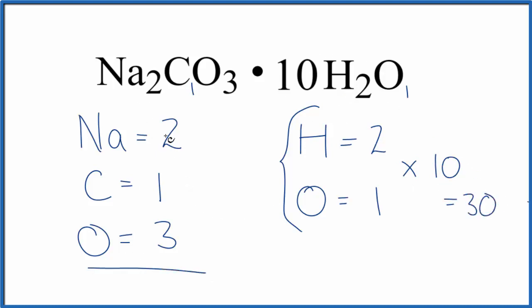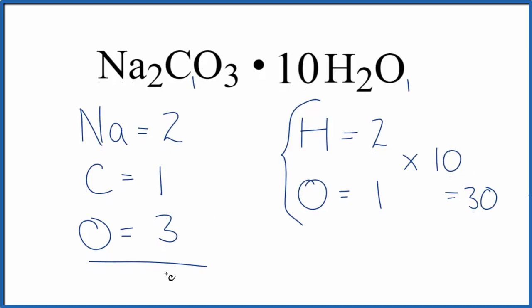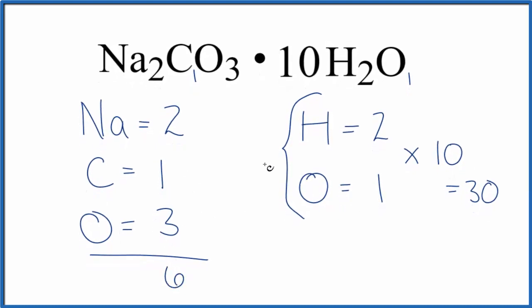And if we count these atoms up, 2 plus 1 is 3, plus 3 is 6. So if you want to know the total number of atoms for Na2CO3·10H2O, sodium carbonate decahydrate, you'd add 30. We have 30 atoms in the 10 water molecules.